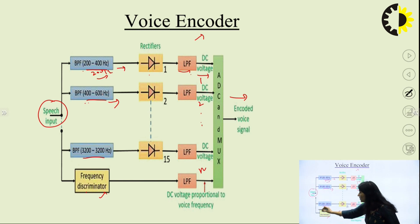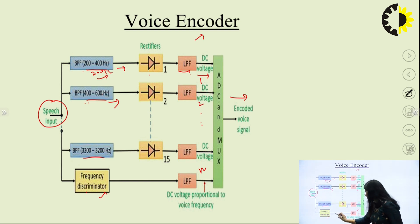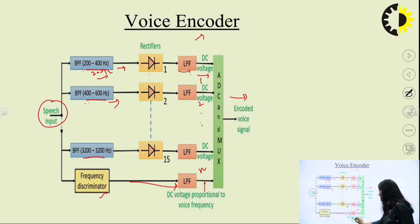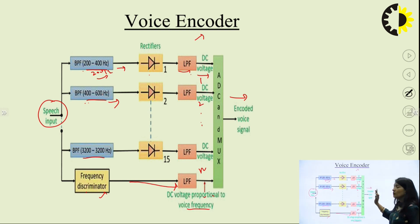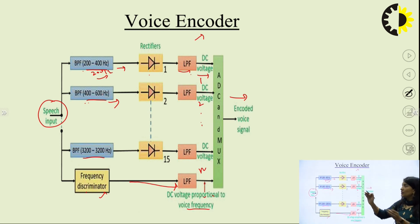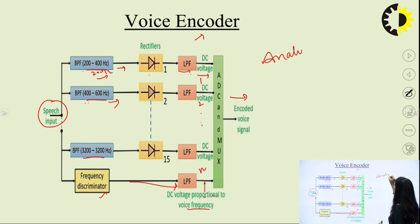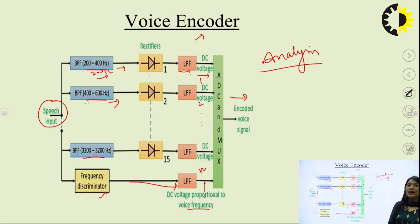We have an ADC and a multiplexer. We need the multiplexer because we have N signals that are multiplexed together and transmitted in one signal format. The output will be the encoded voice signal. There is an additional block, the frequency discriminator, which produces a DC voltage proportional to the voiced frequency. This signal is also transmitted along with the other part of the speech signal. This is how encoded bits are generated at the transmitting end — this process is known as analysis.